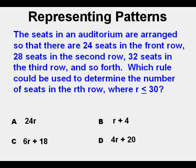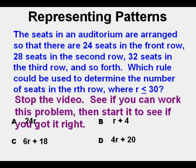We have another representing patterns problem. The seats in an auditorium are arranged so there are 24 seats in the front row, 28 in the second, 32 in the third, and so forth. Which rule could be used to determine the number of seats in the Rth row where R is less than or equal to 30? Let's go ahead and stop the video, see if you can work this problem, then start it to see if you got it right.